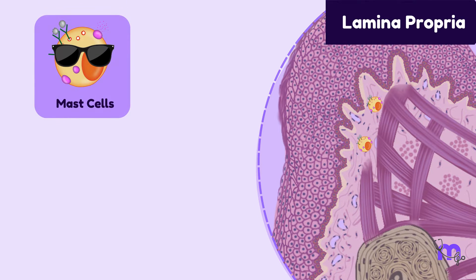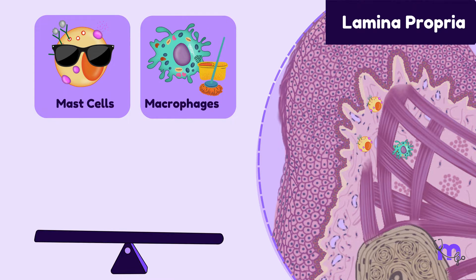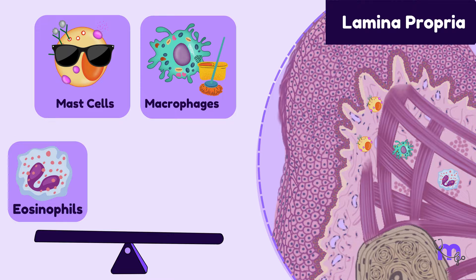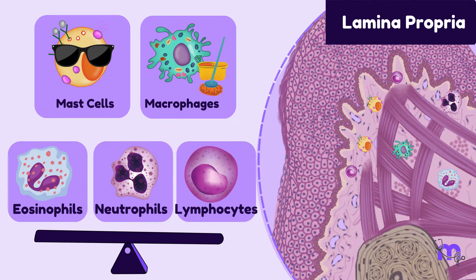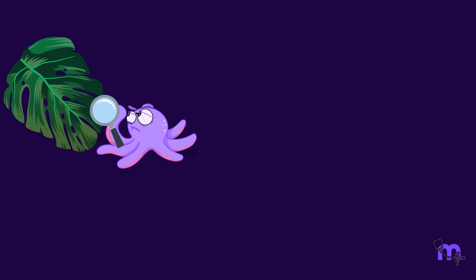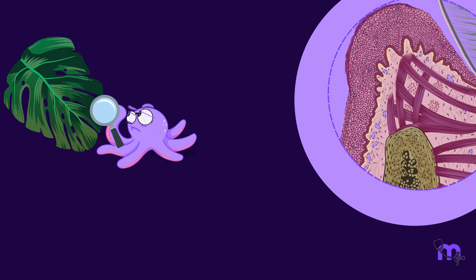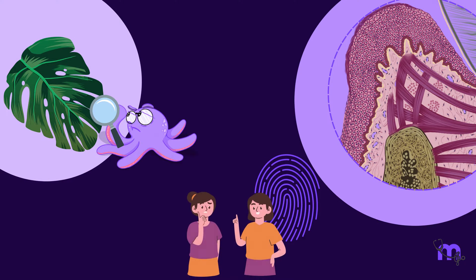They've got a whole crew: vigilant mast cells, cleanup crew like macrophages, and the balance keepers — eosinophils, neutrophils, and lymphocytes. It's a team effort. The gingival connective tissue has its unique pattern, just like our fingerprint — no two people have the same structure. You can call it the gum's blueprint.